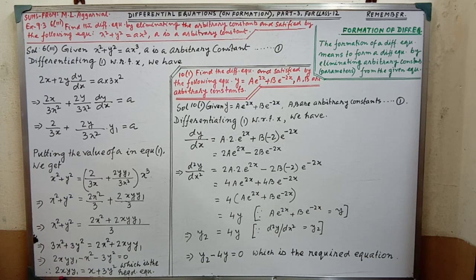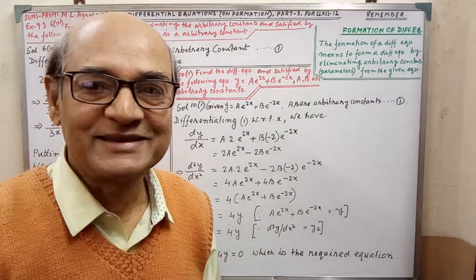we are getting 2xy y1 equal to x plus 3y squared, which is the required equation. Very simple.